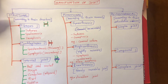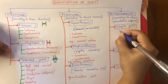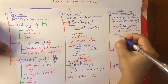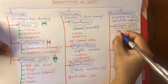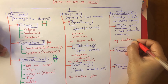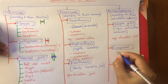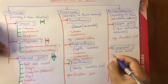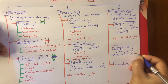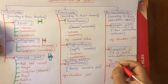A simple joint is where two articulation surfaces are present. For example, the shoulder joint. A compound joint is where three or more articulation surfaces are present. For example, the radiocarpal joint.